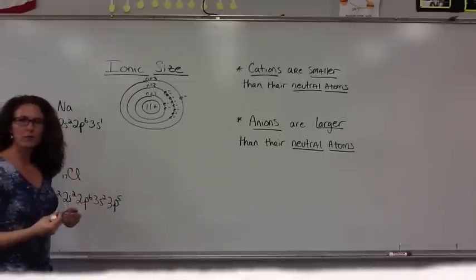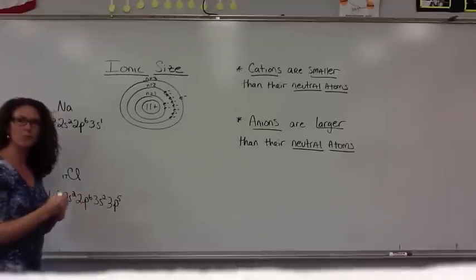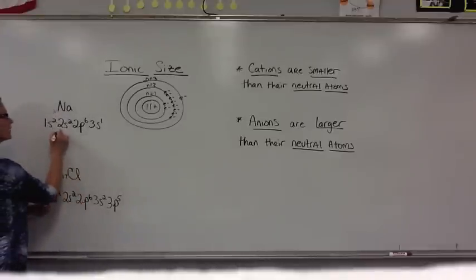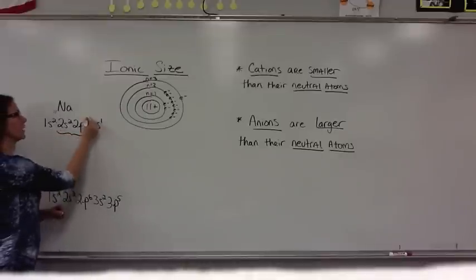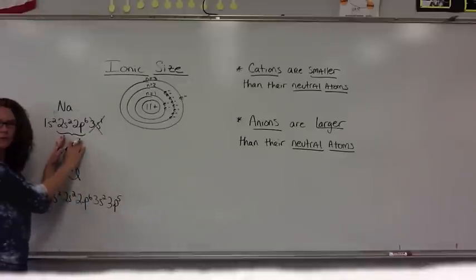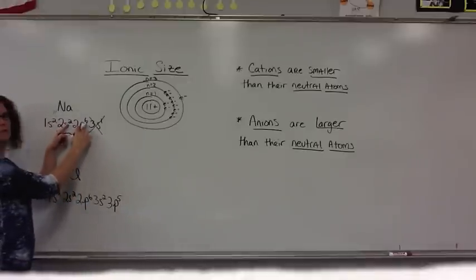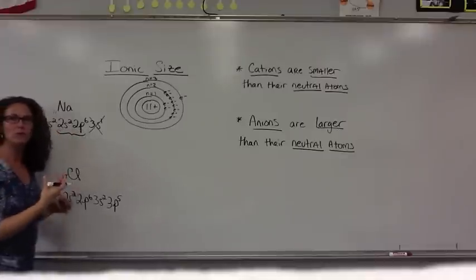When we talked about electron configurations, we know that generally atoms want to have those filled outermost S and P sublevels filled. By losing this outer electron that sodium has, this one valence electron, it will have its previous energy level with eight valence electrons, and the outermost S and P sublevels will be filled, just like those noble gases.